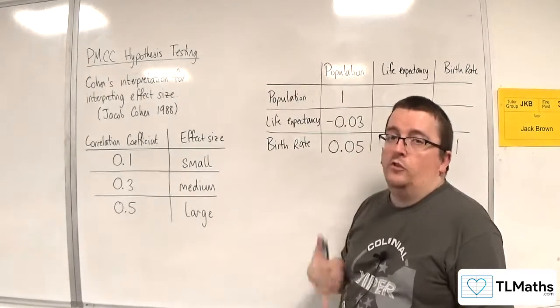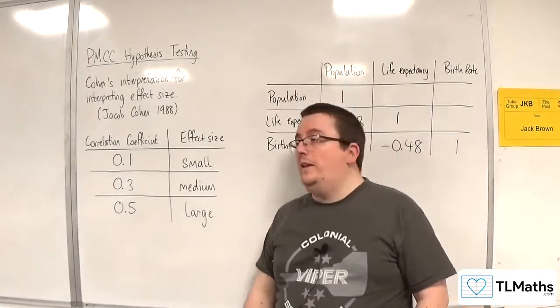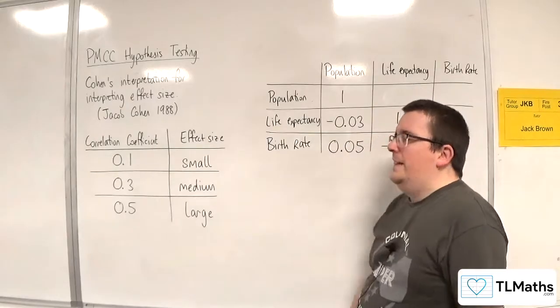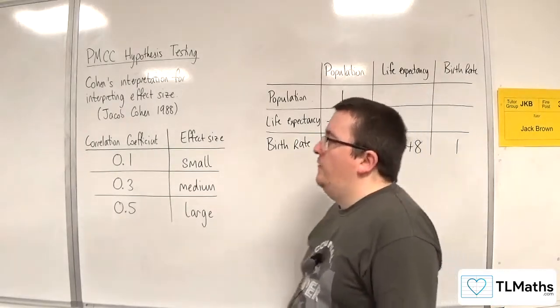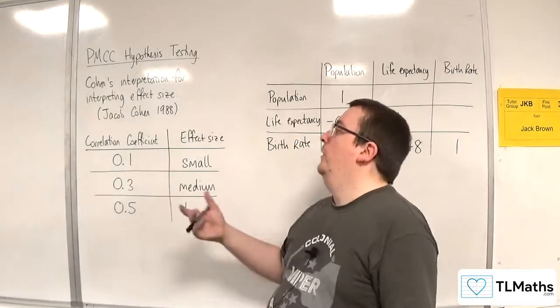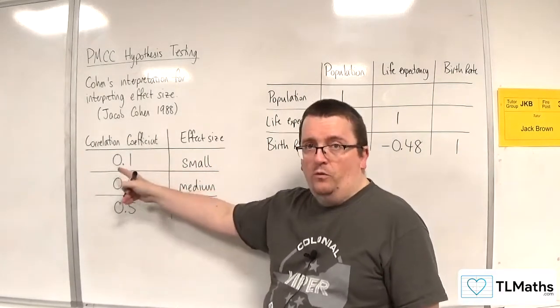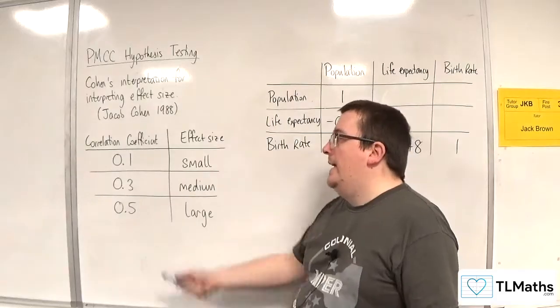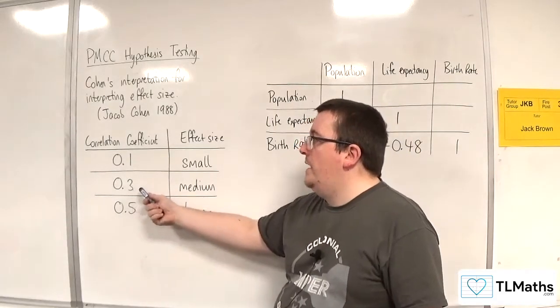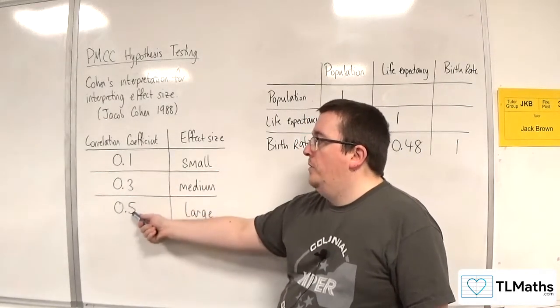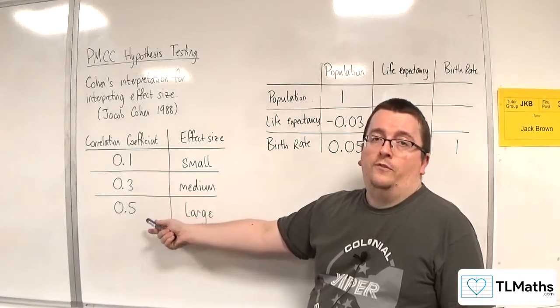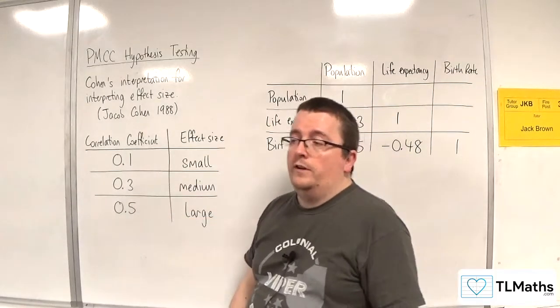Now, how do you interpret this? Because you're comparing it against a PMCC level. So essentially, if your values are close to 0.1, that's a small effect size, or anything less than 0.1 certainly is small. Again, close to 0.3 and close to 0.5, or larger than 0.5 would be considered a large effect size.